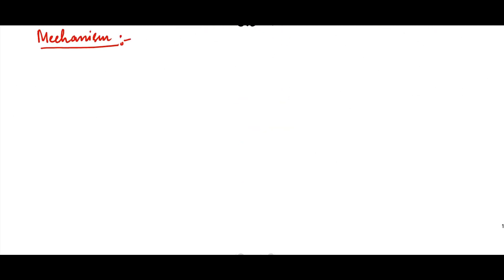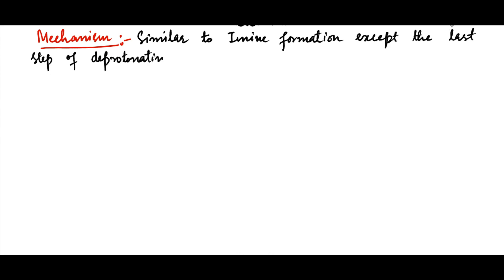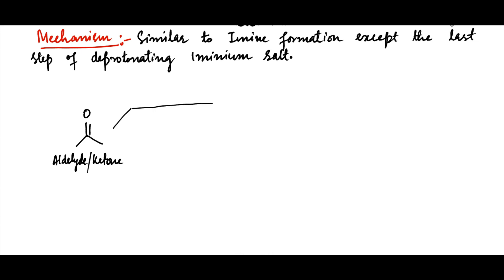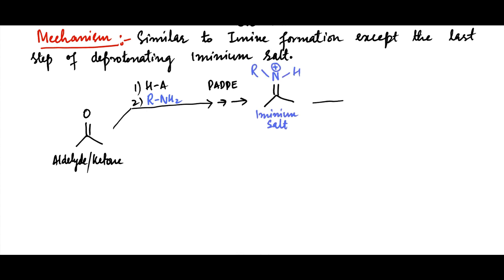The mechanism of enamine formation is similar to imine formation except the last step of deprotonating the iminium salt. Aldehydes or ketones in the presence of acid catalyst react with primary amine via five reaction steps to form iminium salt. This iminium salt is then deprotonated at nitrogen to form imine.